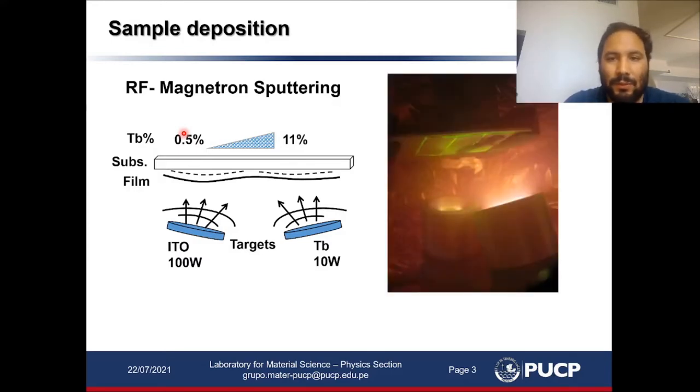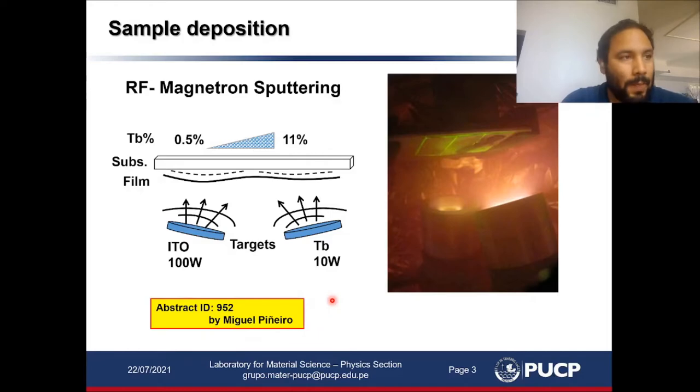We performed this using a closed-cycle cooling system and put the temperature of the substrate down to 10 degrees Celsius. Also, we study and characterize ITO films without any terbium grown in a similar fashion. If you're interested in details concerning these results, please visit the abstract ID and the work presented by Miguel Pinedo.